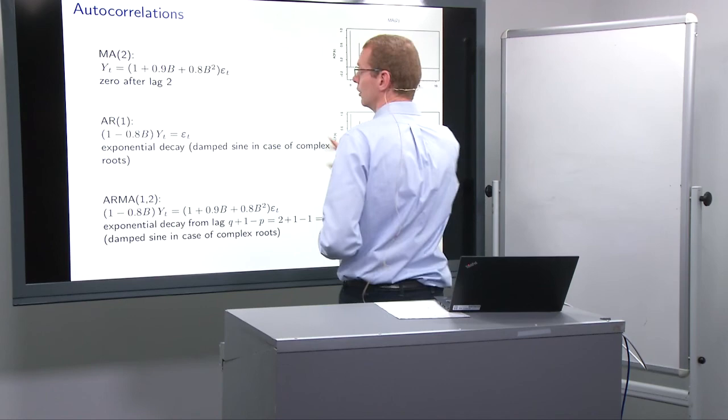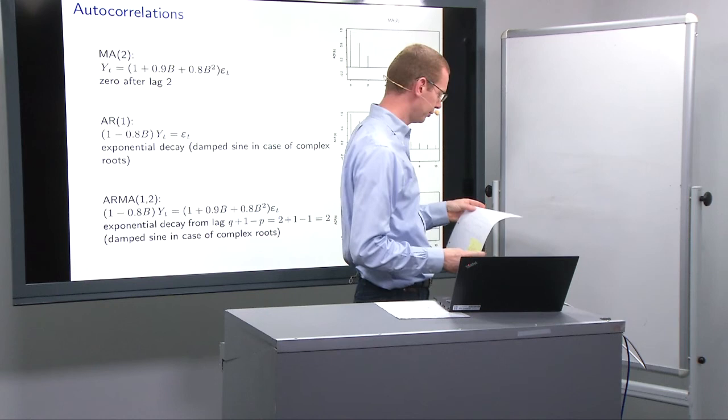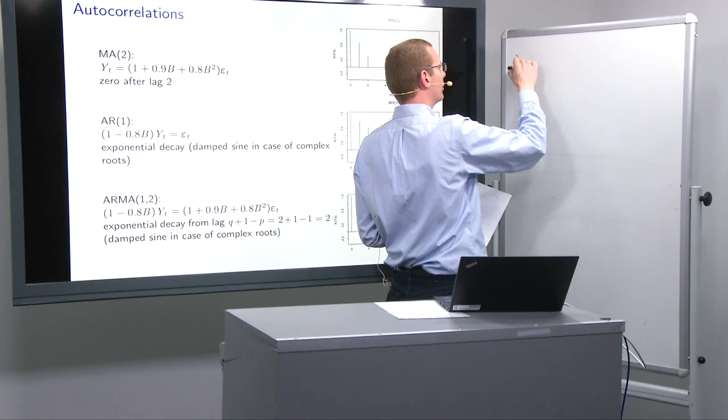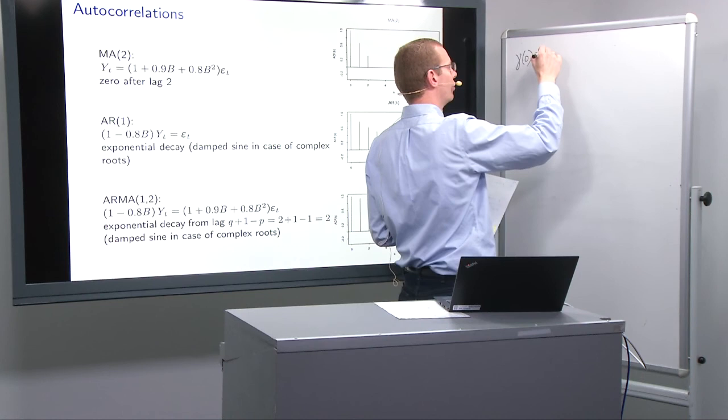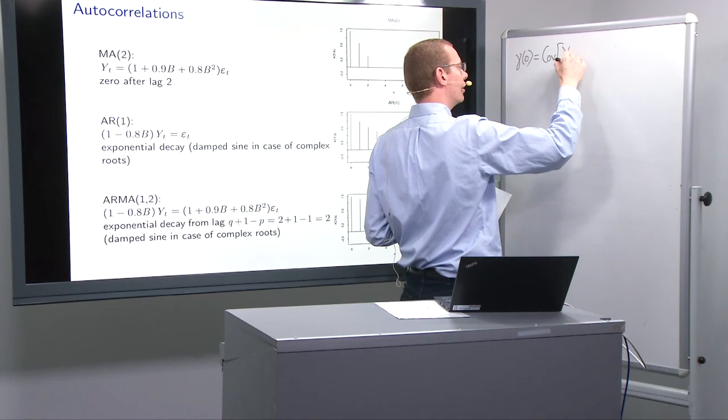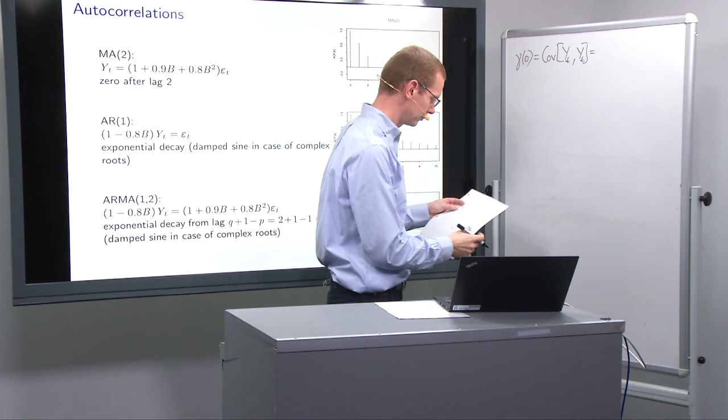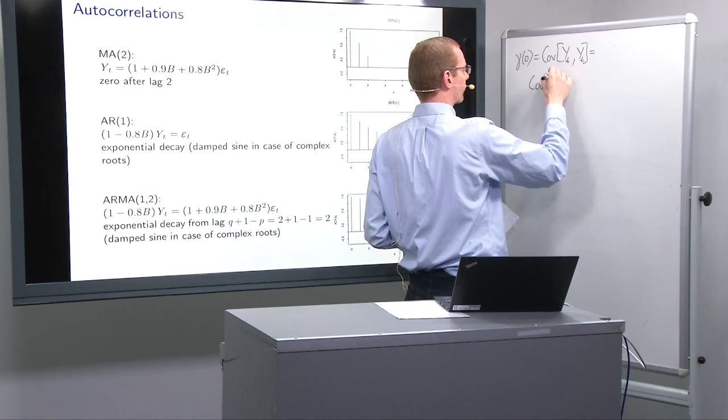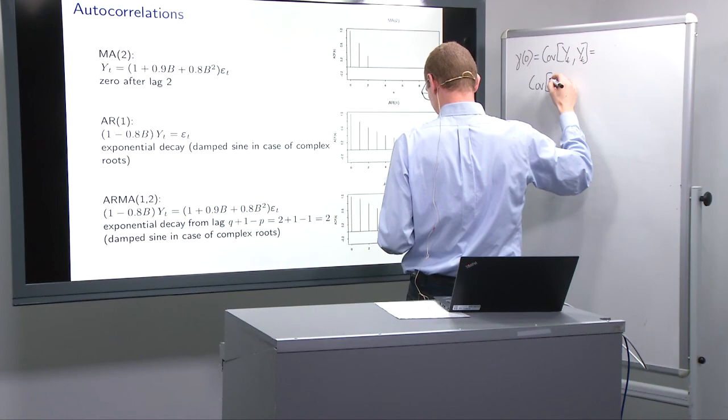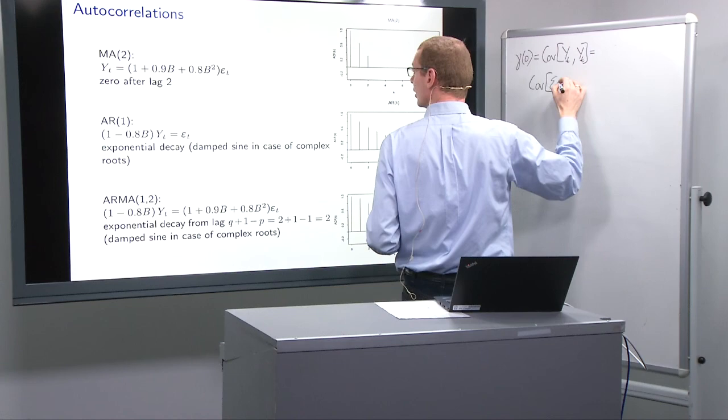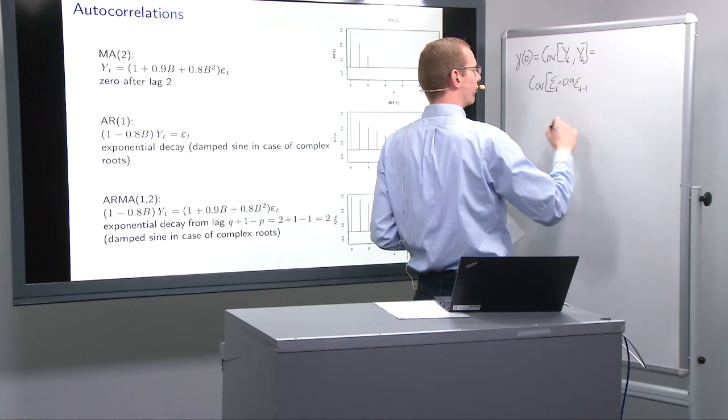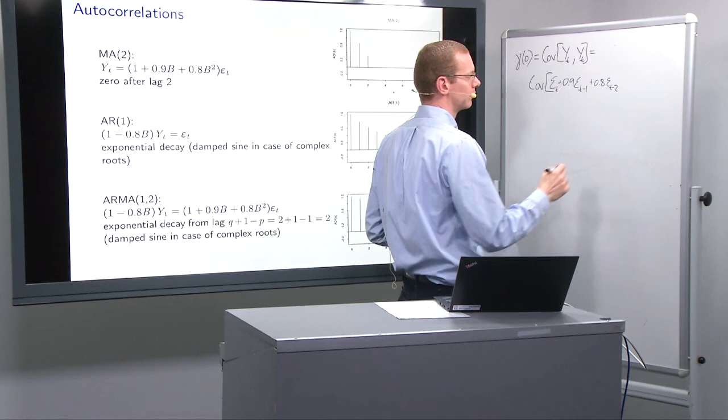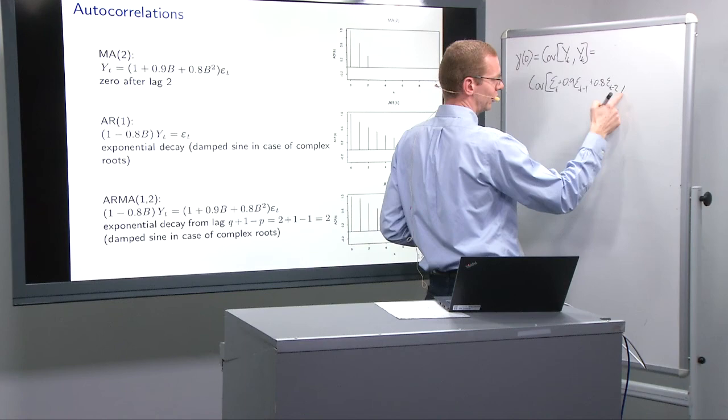So, maybe this is time where we should look at doing the calculations just to get the experience. We have the function looking at the MA2 part up there. What we have to look at, first we have to look at the covariance or the variance. So, gamma of time zero. That's the covariance of Yt and Yt. So, we just have to look at what we have over here and plug that in.